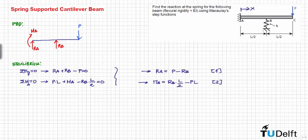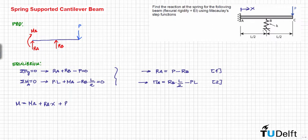Now, using Macaulay's deflection function, we can calculate the distribution of moments for this beam — that is, the moment M at any arbitrary point X. M is equal to Ma plus Ra times X, plus Rb times the bracket (X minus L/2), where this Macaulay bracket term is applied at L/2.